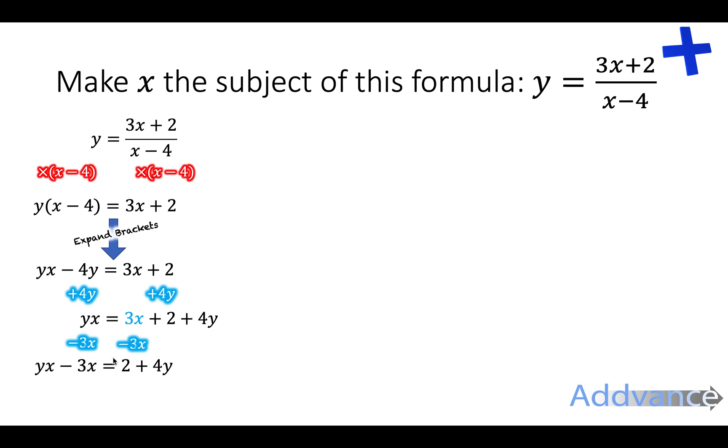All of this was to just get the x's on the same side. Because now, what I can do is I can factorise out the x's. So I can factorise the left hand side of the equation. And I get x times y minus 3 equals 2 plus 4y. This is a really important step. If you have more than one of the same symbol in the equation and you want that symbol on its own, you need to factorise it out by getting it all to one side and then factorising.